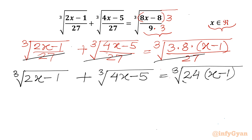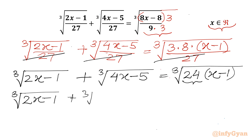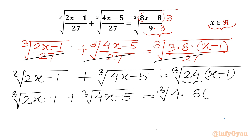Now we can factor 24 as 4 times 6. So we can write: cube root of (2x − 1) plus cube root of (4x − 5) equal to cube root of 4 times (6x − 1).